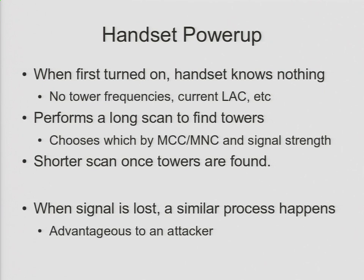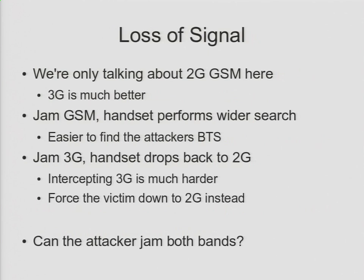Once it starts finding some towers, it limits the size of that scan — it performs a much smaller scan much more rapidly because it has some information about what bands are in use, what towers are in use, what channels to look for. So an attacker can use this to his advantage because if you DOS the cell phone system to make people lose signal, when those handsets connect back up again they're going to perform this long, much wider band scan and have a much higher chance of connecting to the attacker's tower.